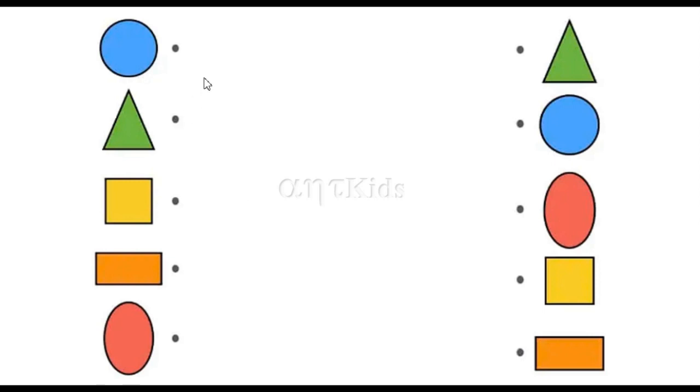Next, we will match the shapes with the corresponding shapes. This is circle. Blue color circle. Let's match the circle with the blue color circle. This is a triangle. Green color triangle. Here, green color triangle is here.